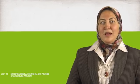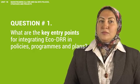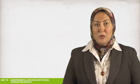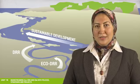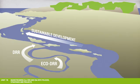Question number one: what are the key entry points for integrating ECODRR in policies, programs, and plans? First, we need to ask: what is mainstreaming and how do we go about it? Mainstreaming is about integrating a less common approach into a more common one. In this case, we are referring to integrating ecosystem management into disaster risk reduction and climate change adaptation to achieve sustainable and resilient development.